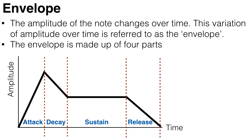Now, the envelope is made up of four parts: the attack, which is the initial strike of the note which creates a loud sound; the decay, which is the drop in intensity immediately after the attack; the sustain, which is the steady state sound of the note as it's sustained; and the release, which is when the key is released and the note stops sounding.